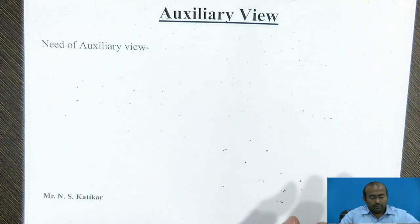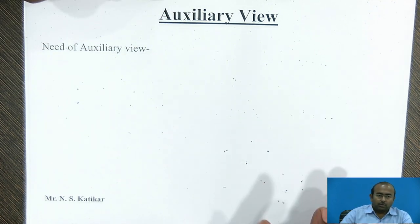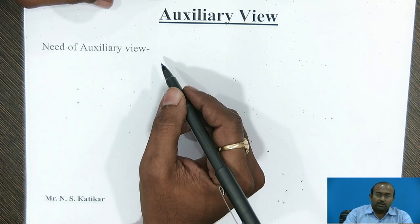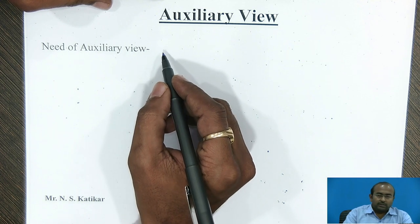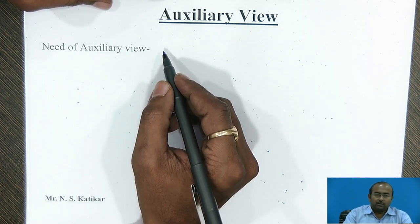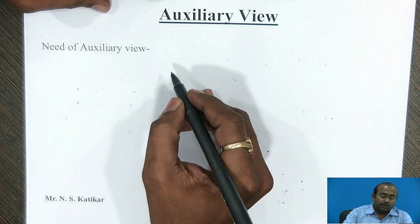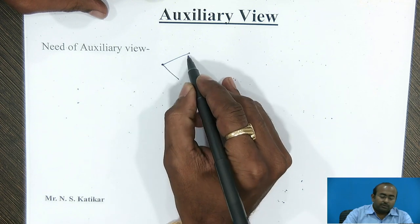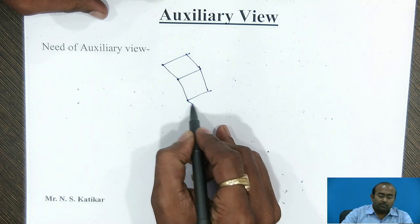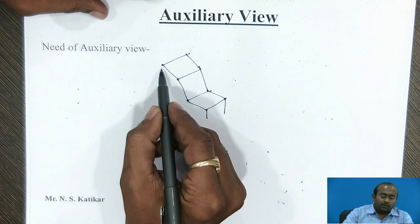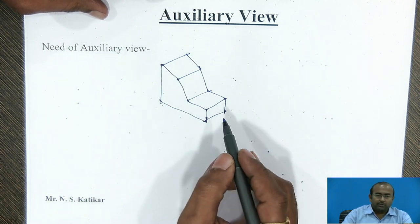After these two different methods of part geometry representation, we will proceed with the auxiliary view and discuss first of all the need of auxiliary view — why to go with the auxiliary view. Whatever constraints or difficulties come across in the representation of orthographic view will be overcome by the auxiliary view. Let us see the example of this part geometry. This is the simple part geometry and this is the isometric view created here.